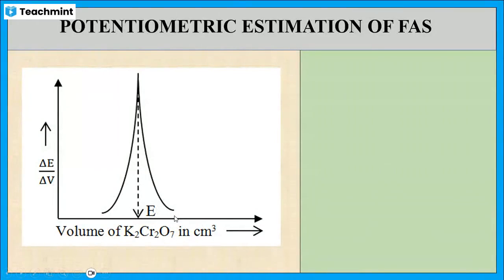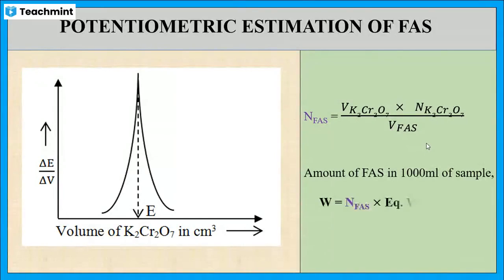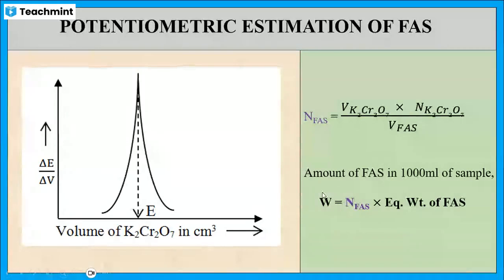Then, the strength of FAS (N_FAS) can be calculated by multiplying the equivalence point volume of potassium dichromate by the strength of potassium dichromate, divided by the volume of FAS taken. Then, by multiplying the strength of FAS with the equivalent weight of FAS, we will get the amount of FAS in 1000 ml of the solution.